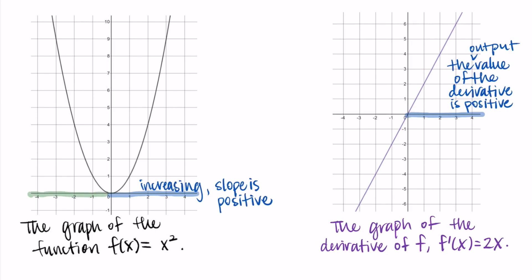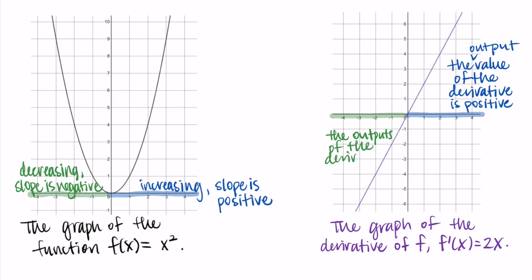We can follow a similar thought process for decreasing. From negative infinity to zero, x² is decreasing, meaning the slope is negative. So when we look at the graph of the derivative, we should see negative output values — and from negative infinity to zero, the outputs of the derivative are indeed negative.